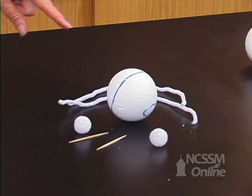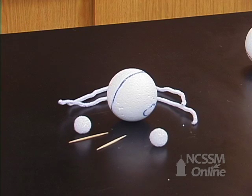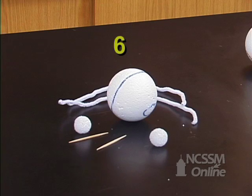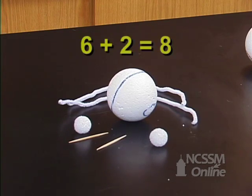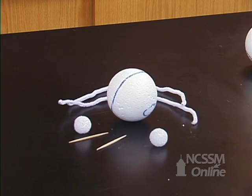Let's make a water molecule. This is oxygen and this is hydrogen. You can see their relative size. Oxygen has six valence electrons and each of the hydrogens has one, so that gives us a total of eight electrons. We want to satisfy everybody's octet rule, so that means we need to have eight things around oxygen and two shared electrons with the hydrogen.